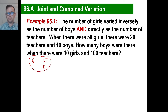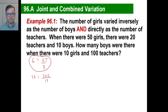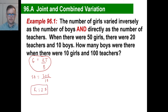We're going to find k just like we always do. When there were 50 girls, there were 20 teachers and 10 boys. So we need to find our k. 20 over 10 is just 2, so 2 times k equals 50, which means k is 25. There's our answer for what k is.